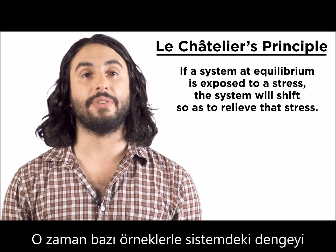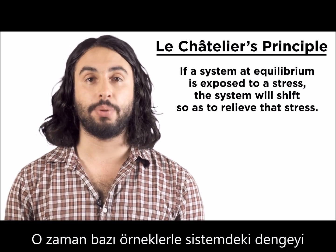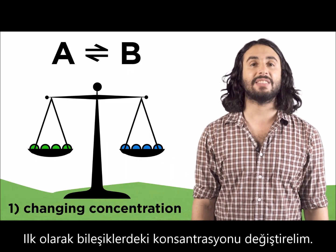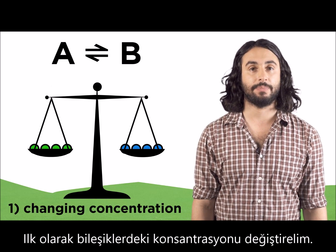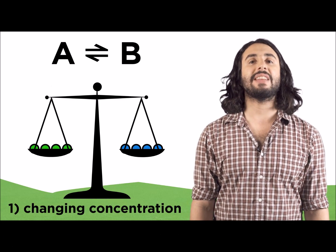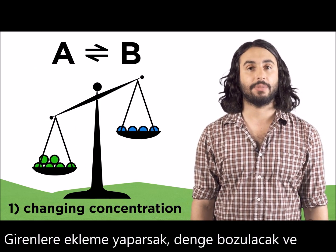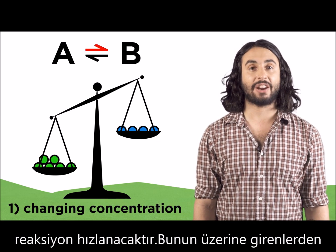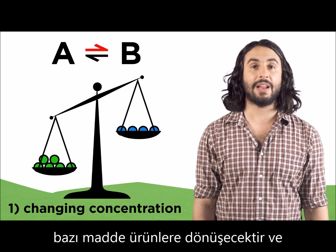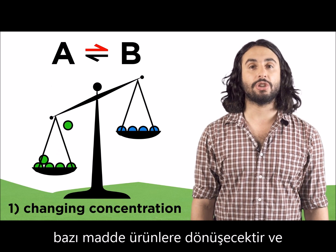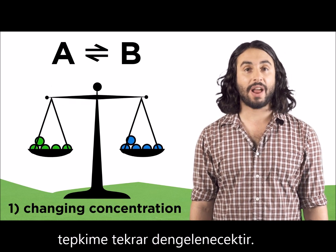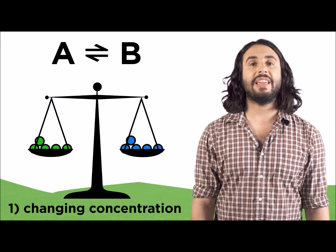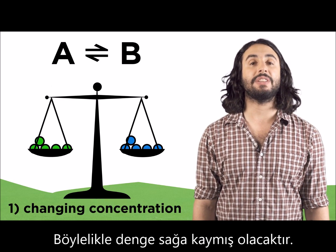Let's see some examples of a stress we could put on a system at equilibrium. First, we could modify the concentration of any of the compounds. Let's say we add some of this reactant. That will unbalance the equilibrium, and the forward reaction will speed up to use up some of the additional reactants, turn them into products, and restore equilibrium. The equilibrium is said to have shifted right.